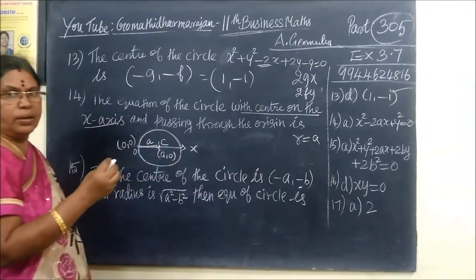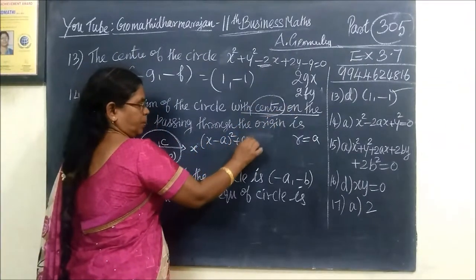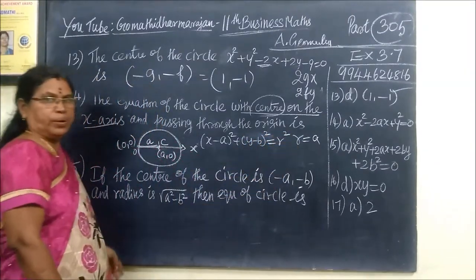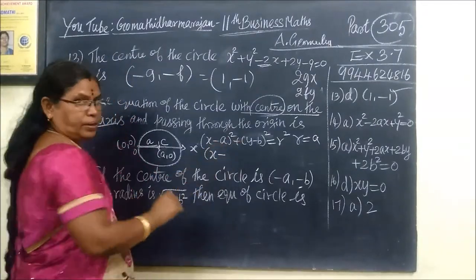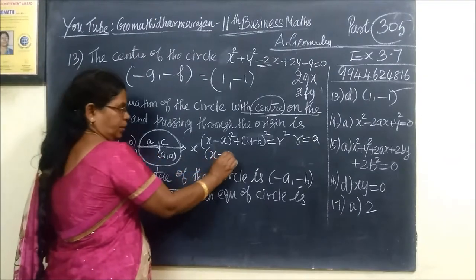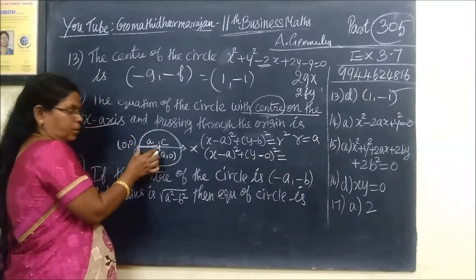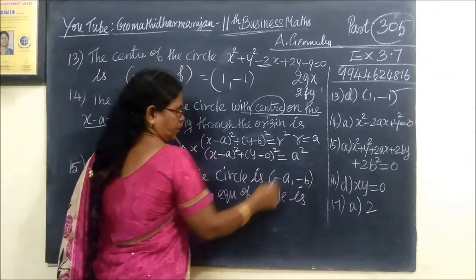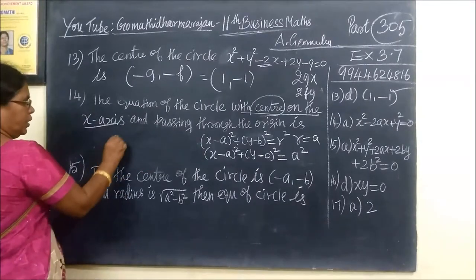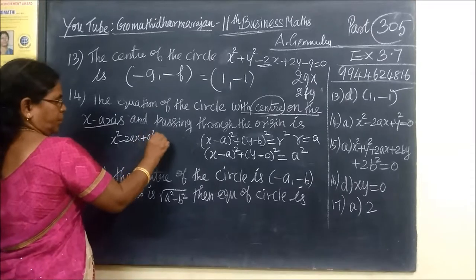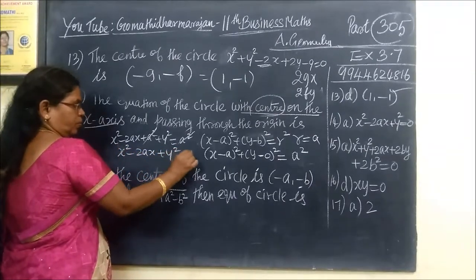If we know the radius and center, the equation of the circle is (x - a)² + (y - b)² = r². Here center is (a, 0) and r = a, so: (x - a)² + y² = a². Expanding: x² - 2ax + a² + y² = a², which simplifies to x² - 2ax + y² = 0.